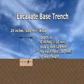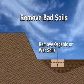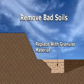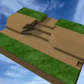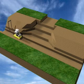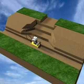The minimum width for a base trench is 24 inches. The depth of the trench is determined by allowing for 6 inches of base material plus 1 inch per foot of wall height. If organic or wet soils are still present in the base trench area, they must be removed and replaced with granular material. Excavate the base trench to the necessary depth, then compact and level the base trench making a minimum of 2 passes with a mechanical plate compactor.